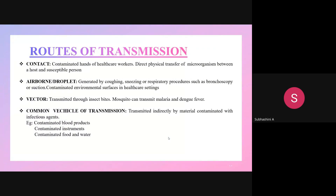The routes of transmission of nosocomial infection include: contact (direct contact), airborne or droplet transmission through coughing and sneezing, vector-borne transmission, and common vehicle transmission — through contaminated blood products, contaminated instruments, and contaminated food and water.